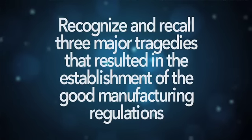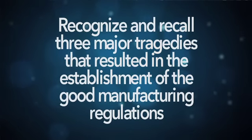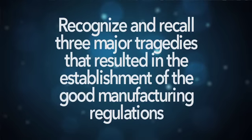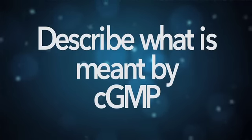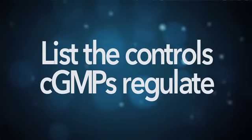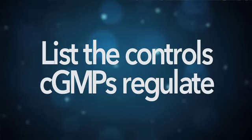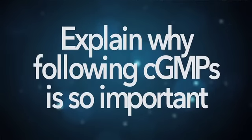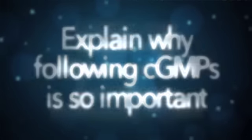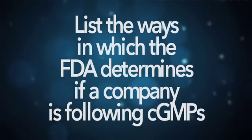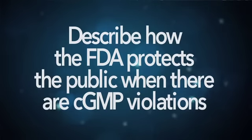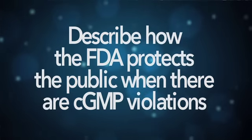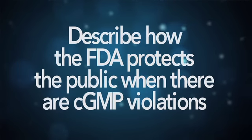At the conclusion of this program, you should be able to recognize and recall three major tragedies that resulted in the establishment of the Good Manufacturing Regulations; describe what is meant by CGMP and list the controls CGMPs regulate; explain why following CGMPs is so important and list the ways in which the FDA determines if a company is following CGMPs; and finally, describe how the FDA protects the public when there are CGMP violations.